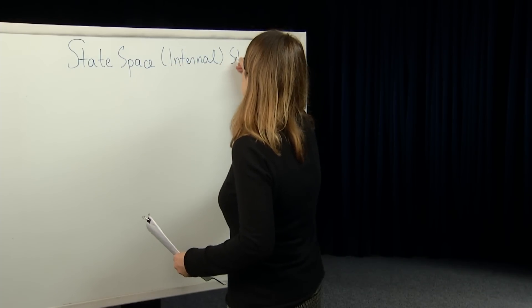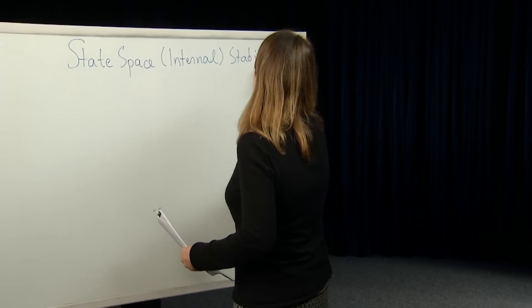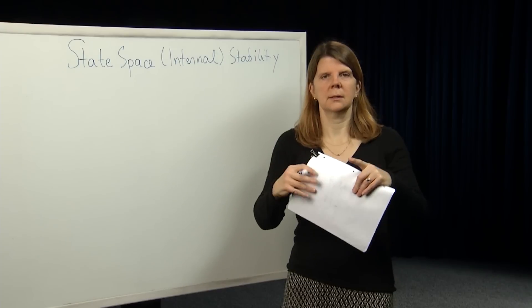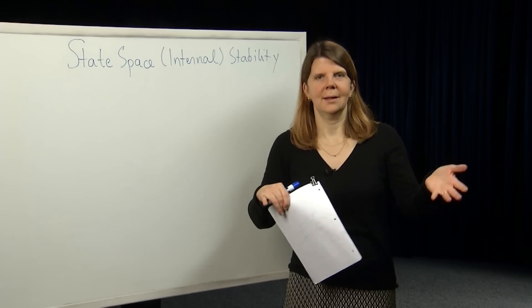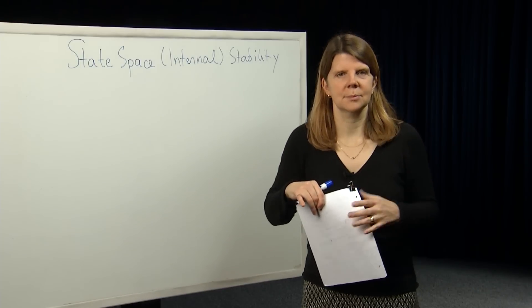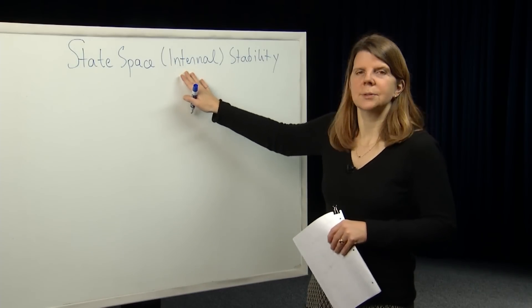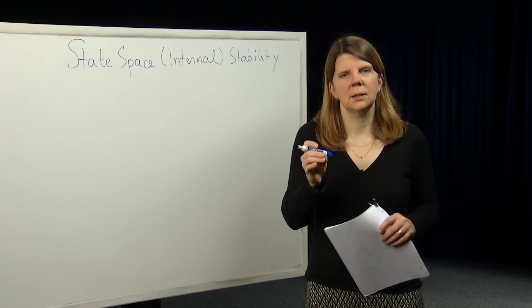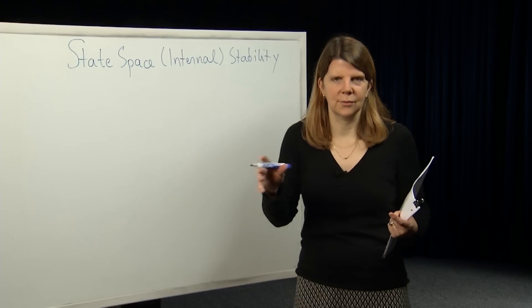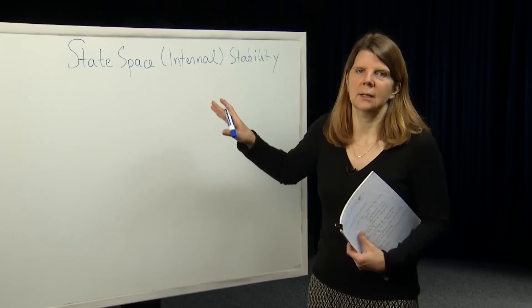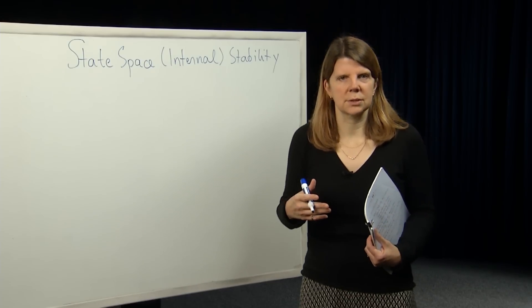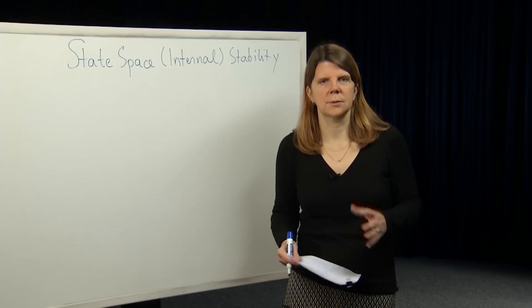The idea is that internal stability is in contrast to input-output stability, which looks at the system from the outside — looking at the inputs applied and the outputs measured to characterize or assess stability. Internal stability has to do with the internal states, which could be variables hidden from the input and output. We look at the modes of the system, meaning the state values and how they change over time, to assess whether or not the system is internally stable.